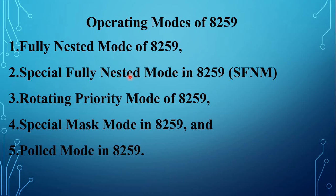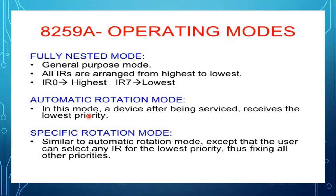These are the operating modes of 8259. The various priority modes of operation available in 8259 are: fully nested mode, special fully nested mode, rotating priority mode, special masked mode, and poll mode. The fully nested mode is the default mode. In this mode, IR0 has the highest priority and IR7 has the lowest priority. When the interrupt is acknowledged, it sets the corresponding bit in the ISR.